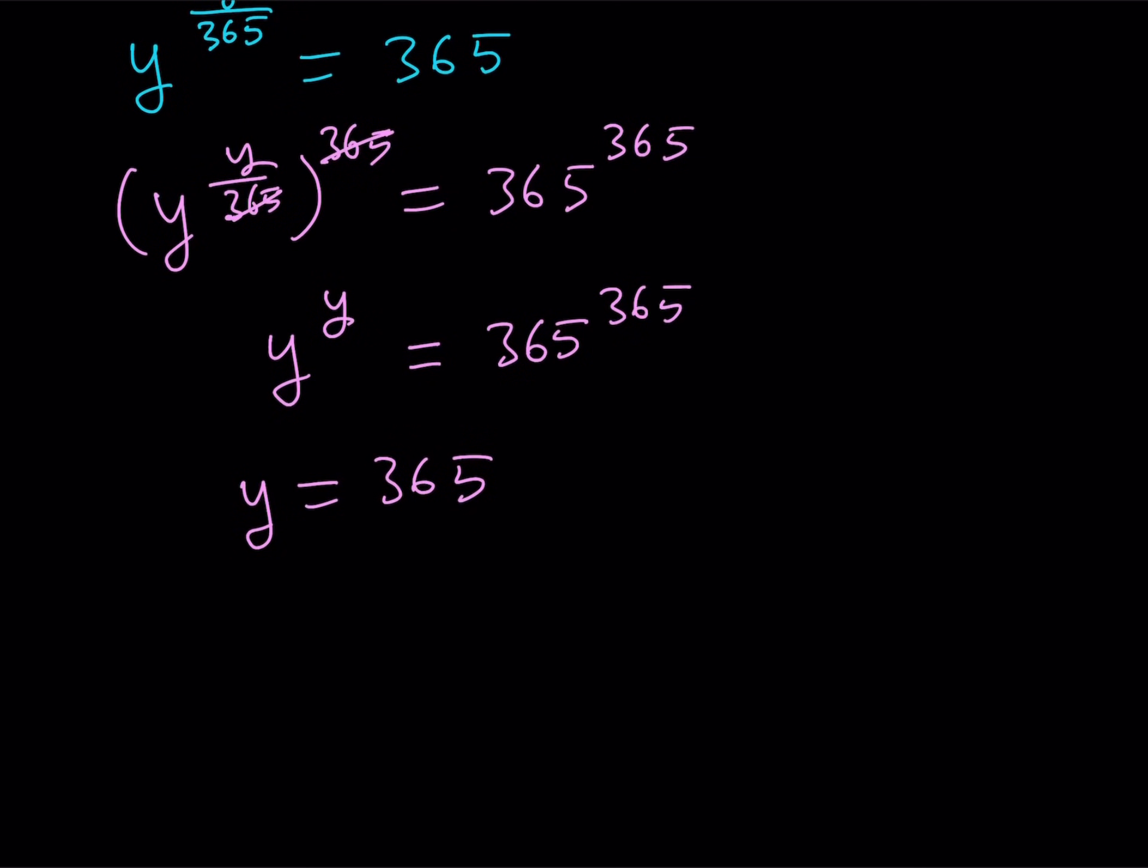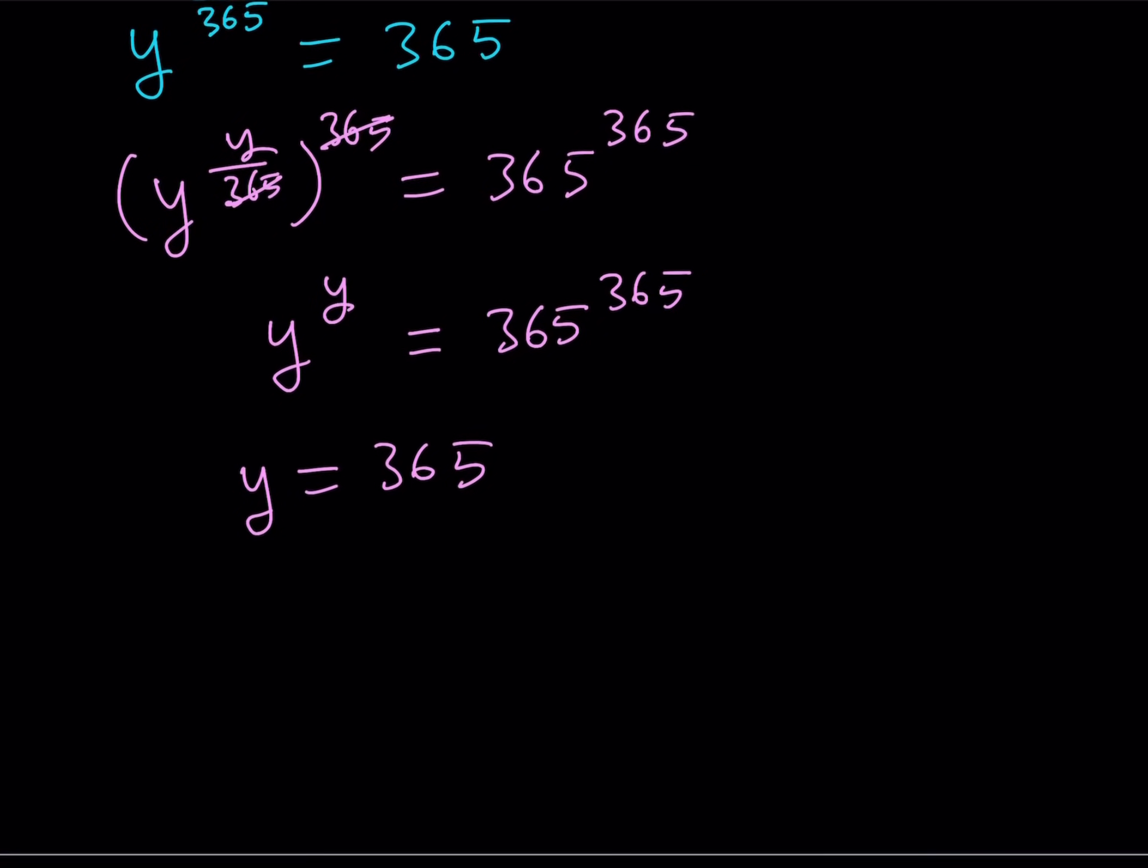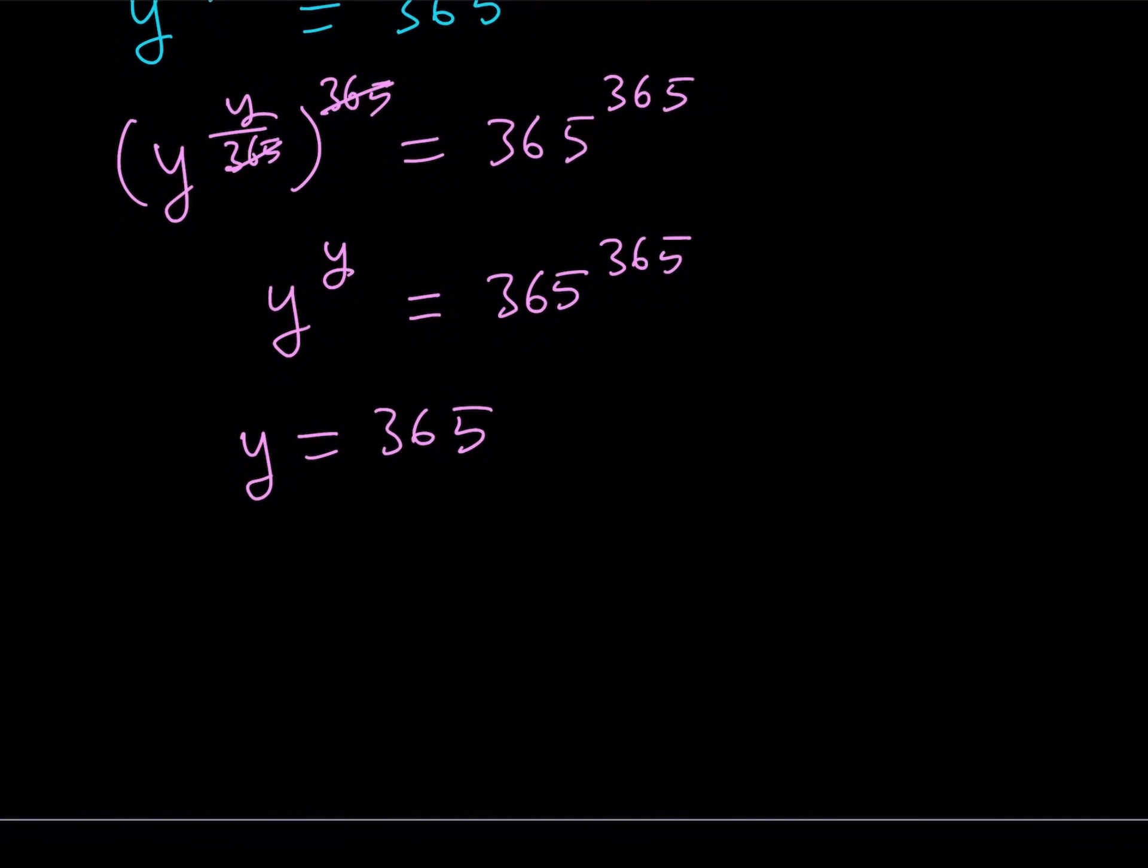But remember that we're not trying to solve for y. We are trying to solve for x. So let's go ahead and back substitute. Y is equal to x to the power 365. So it's going to be like x to the power 365 is equal to 365. So let me go ahead and space these out a little bit so I can show you what I am going to do next. So this is what I'm getting because y is equal to x to the power 365.